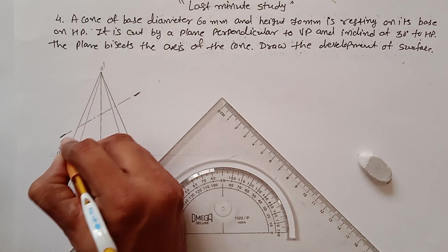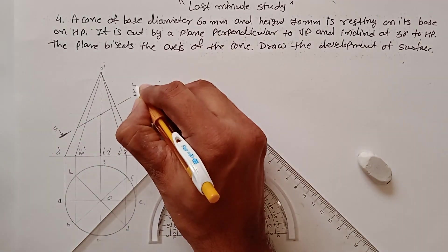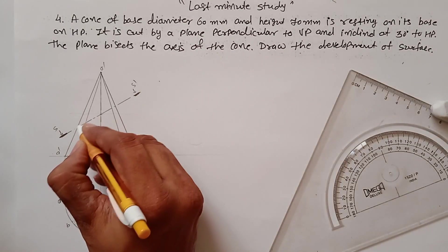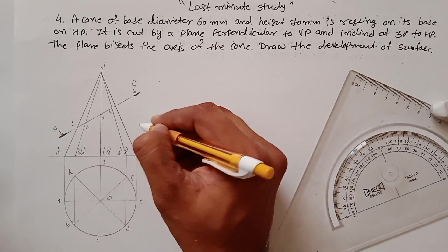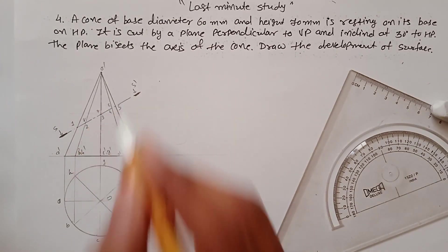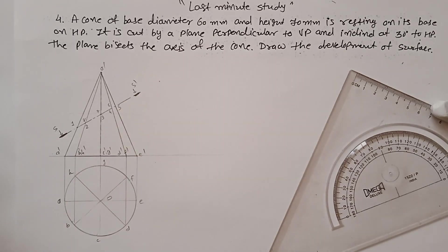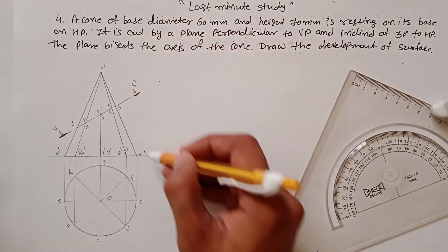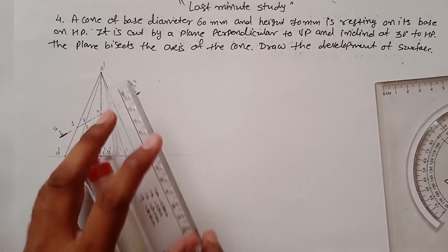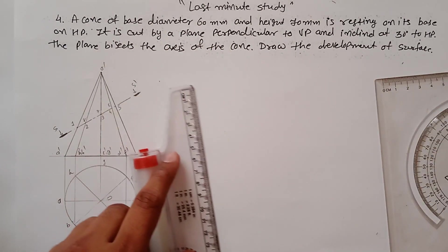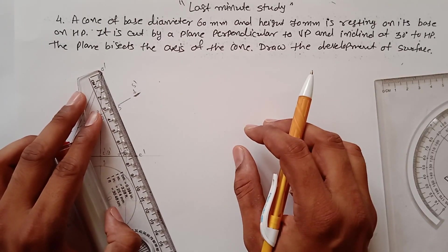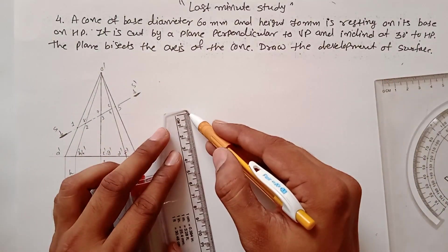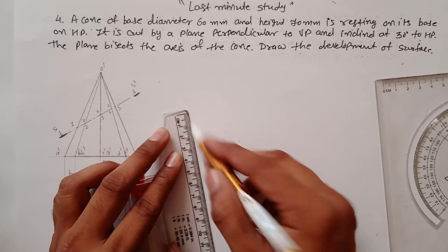Mark arrows and label the section. Now find the intersection points: this point is 1, then 2, 3, 4, 5, 6, 7, and 8 — so we have eight points. As discussed in the pyramid example, transfer all the points to one generator as a reference. First, draw a line with the same length as that generator, which is 75mm.